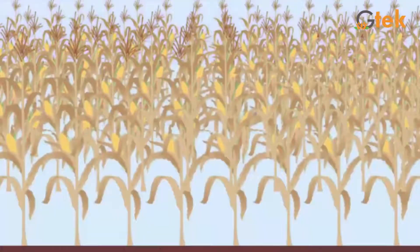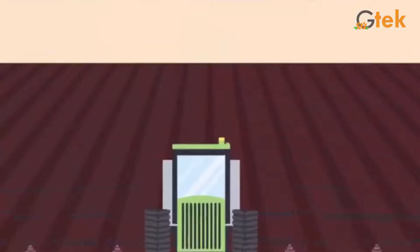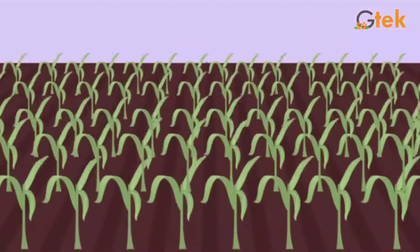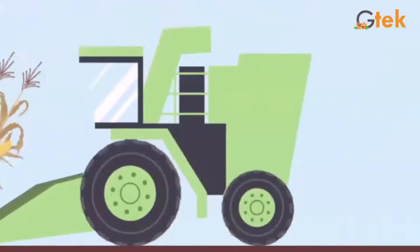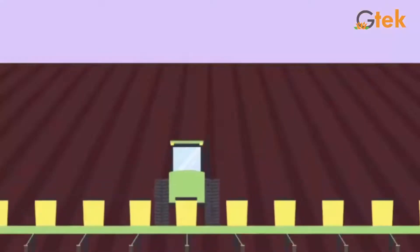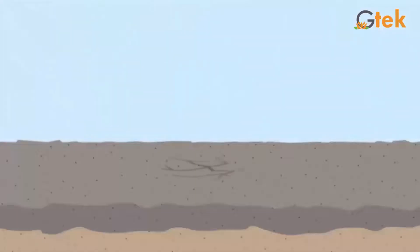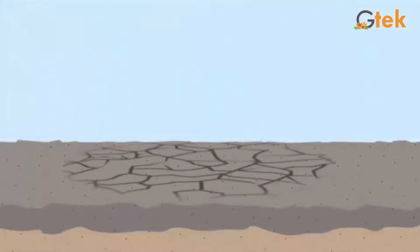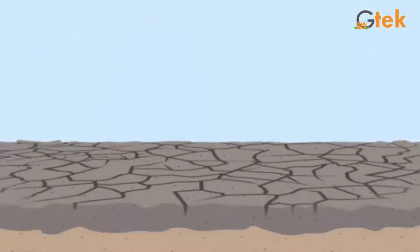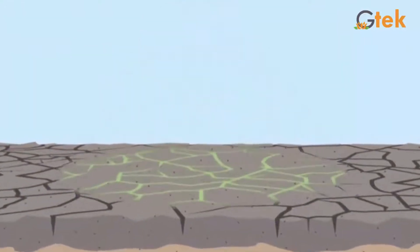Now let us see about how nutrients are spread all over the land. We are going to take two different kinds of lands and compare them.